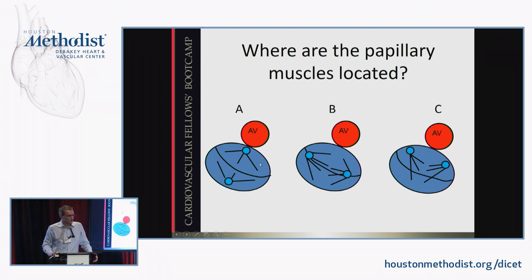Where are the papillary muscles? Option A: mid portion of the anterior and posterior leaflets, each sending cords only to their respective halves. Option B: in the commissures, each sending cords to both anterior and posterior leaflets, but none of the cords cross the midline. Option C: both under the anterior leaflet, sending most cords to the anterior leaflet and just a couple to the posterior. Show of hands — who votes A? B? C?